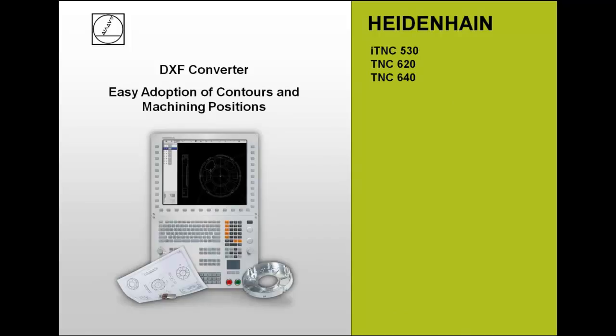The DXF Converter can be used with different Heidenhain controls: with the iTNC 530, with the TNC 620 and 640. There we have different functions depending on the NC software number. The DXF Converter is an option — option 42 — and you can activate it by getting in contact with your machine tool builder or with Heidenhain.